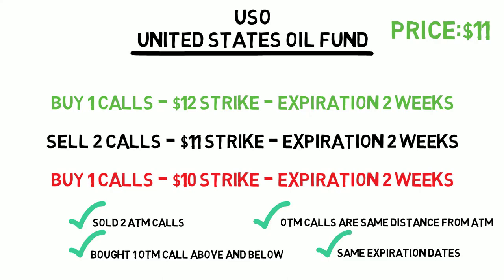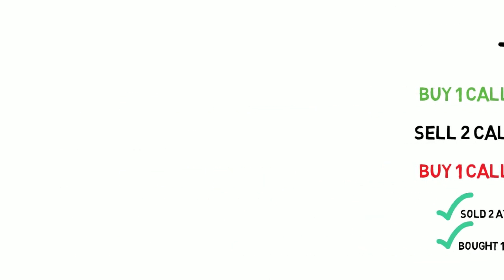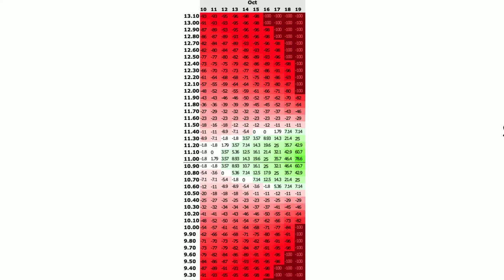So what did this do for us? Let's take a look at our options calculator to get a visualization of our profits. As you can see, we profit the most if USO doesn't move at all and finishes exactly around $11 come two weeks. Unlike simple long calls and long puts, our profits are defined, meaning they are limited by math. In our case, our maximum profit for this play is $44, representing a 78% return on our investment.